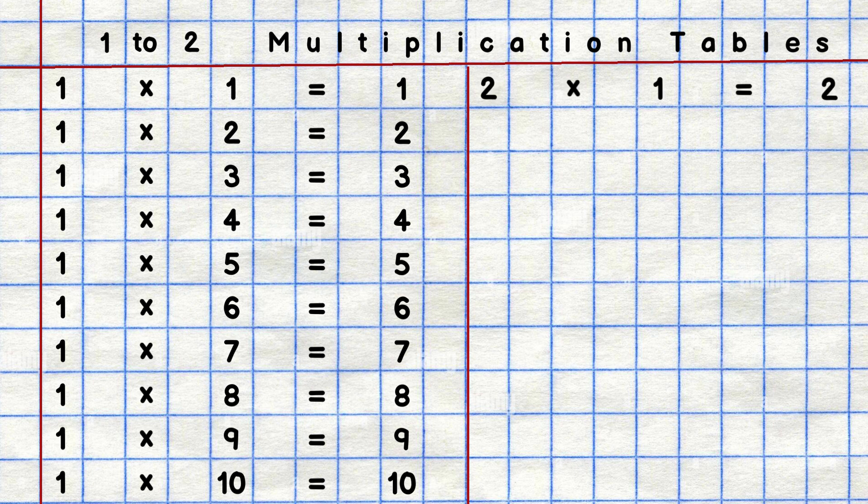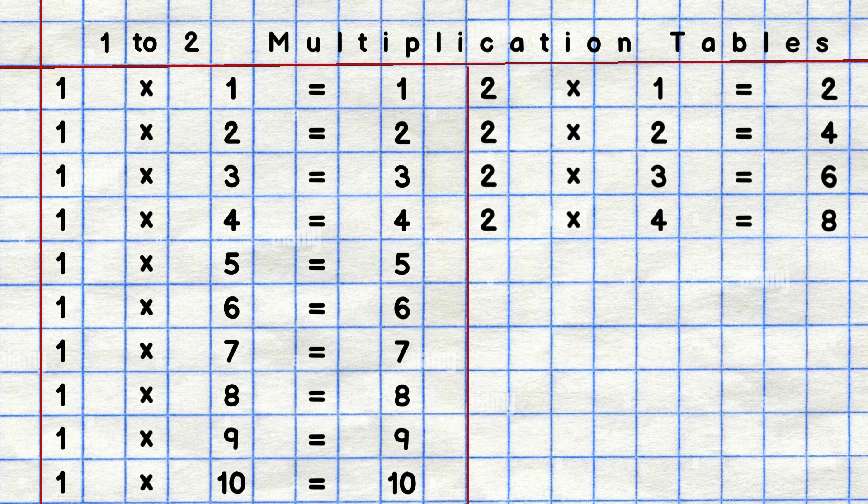2 1s are 2, 2 2s are 4, 2 3s are 6, 2 4s are 8, 2 5s are 10.